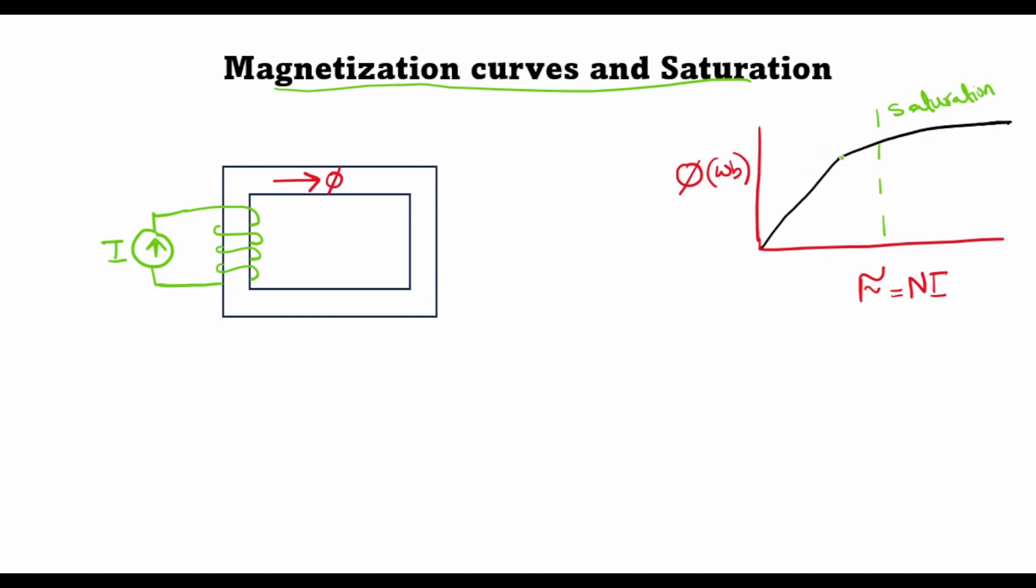This region after which the slope of the curve almost becomes horizontal is known as the saturation region, and the point at which saturation starts to kick in is known as the knee point.